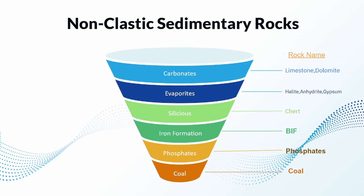First, let's know some examples of non-clastic sedimentary rocks such as carbonate limestone, dolomite rock, evaporites halite, anhydrite, gypsum, and siliceous chert. Moreover, banded iron formations, phosphates, and coal are also non-clastic sedimentary rocks.